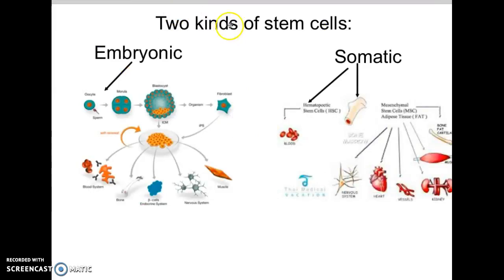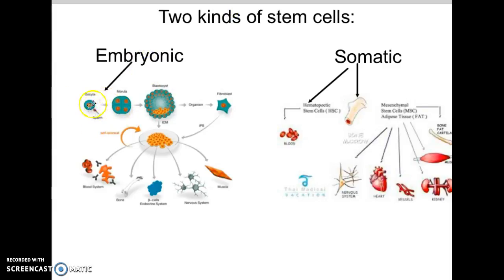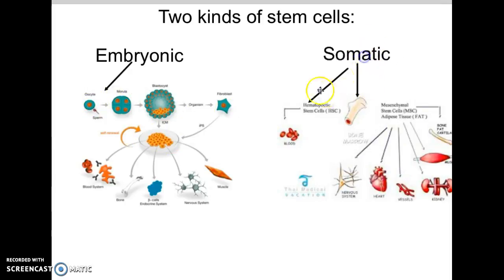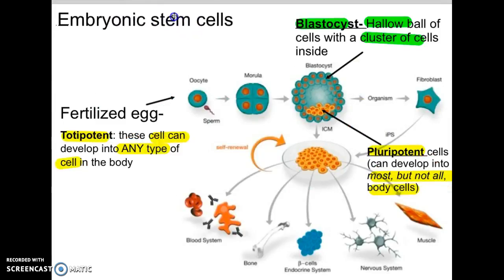There are two types of stem cells. First, embryonic stem cells, which exist in the embryo developing into a baby. Second, somatic stem cells, which are the stem cells we currently have in our body right now. Starting with embryonic stem cells — it all begins with a fertilized egg, meaning the sperm and egg have come together.